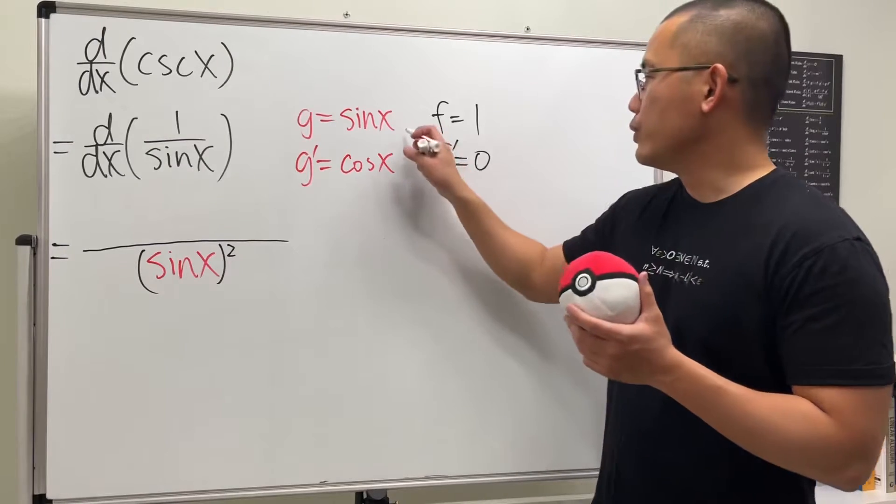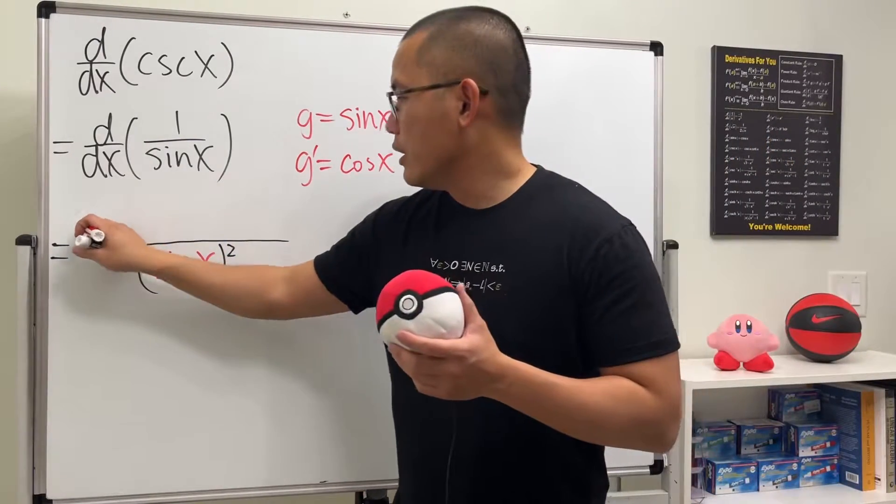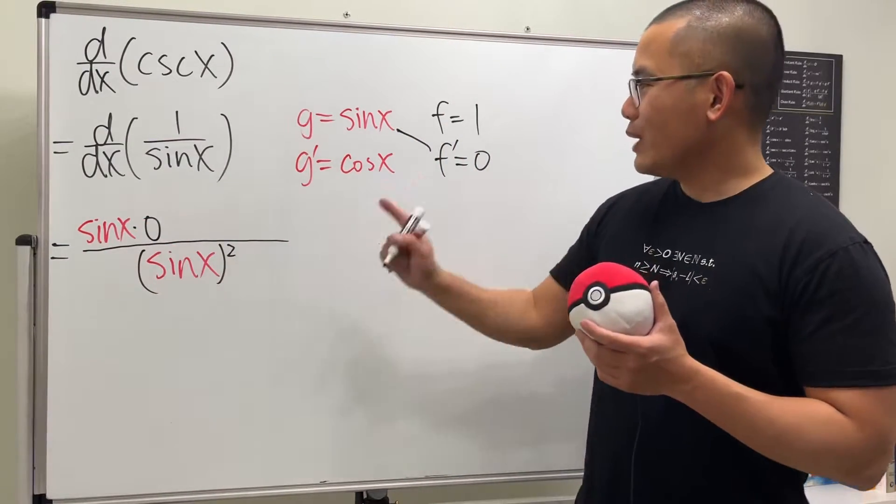And then for the top, we do this times that first, so sine x times zero. Let me just show you guys all the work—I know the answer is zero for that part. Okay, and then we are going to subtract.